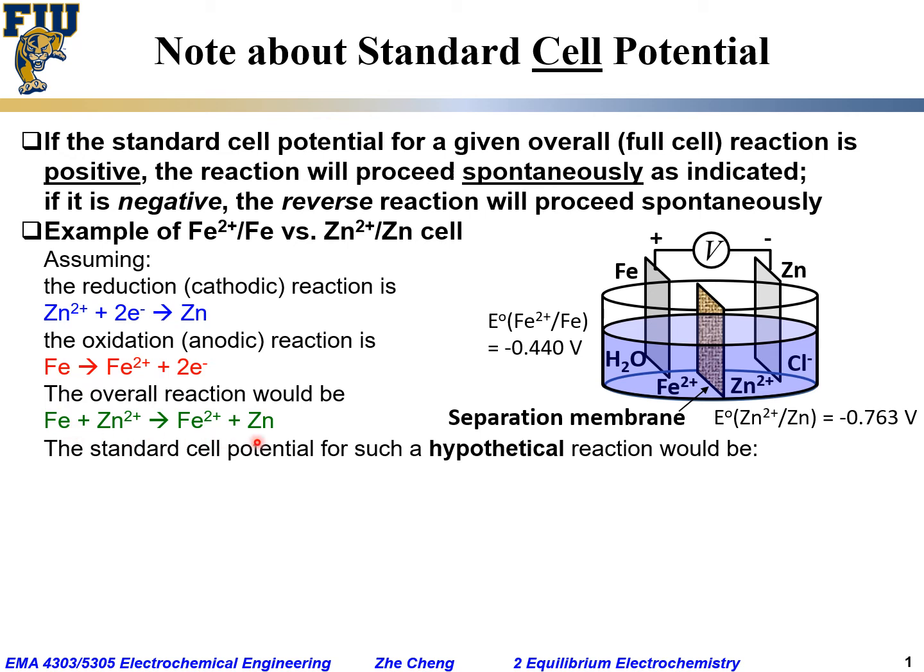If we can write this reaction with the arrow going this way, going from iron metal to Fe2+, from Zn2+ to zinc metal, the standard cell potential for such a hypothetical reaction would be...